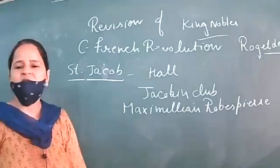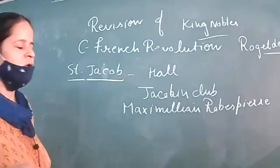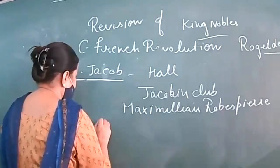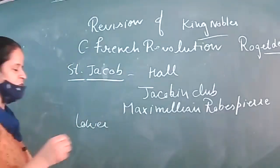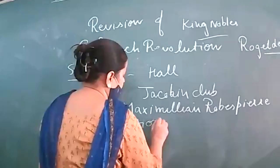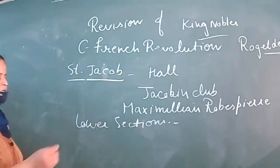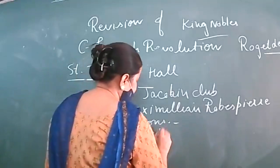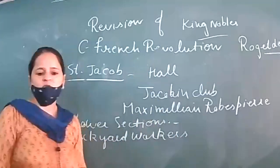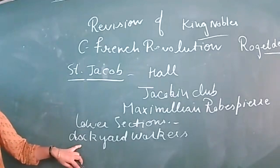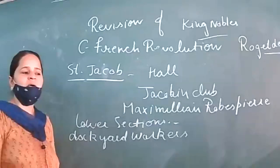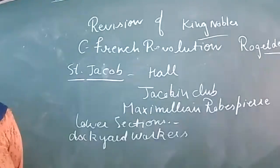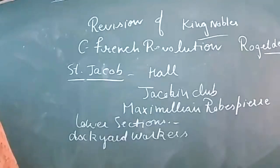Who were the members of the Jacobin Club? Members of the middle and lower sections of society. The lower section means those who do manual work — dockyard workers in port areas who do loading and unloading of ships. Besides that, pastry makers, watchmakers, shoemakers, and flower sellers, or those who do manual work, joined the Jacobin Club.